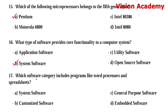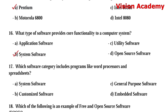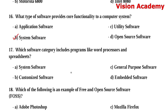Question number 17: Which software category includes programs like word processors and spreadsheets? Option A: system software. Option B: customized software. Option C: general purpose software. Option D: embedded software. The right answer is general purpose software.